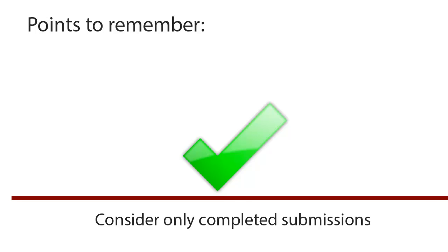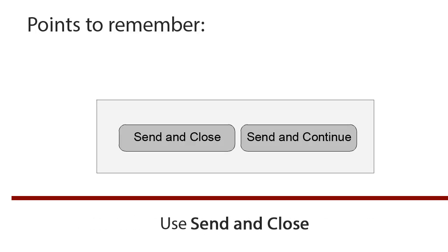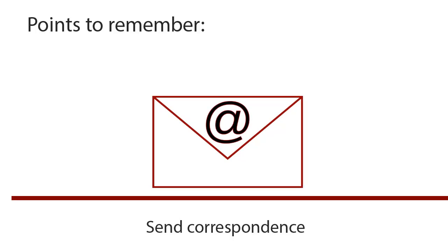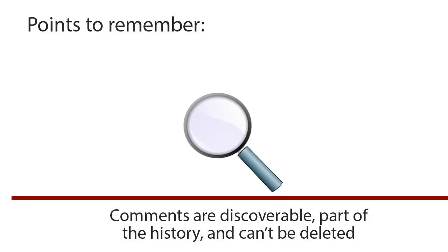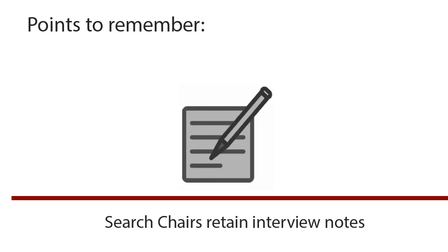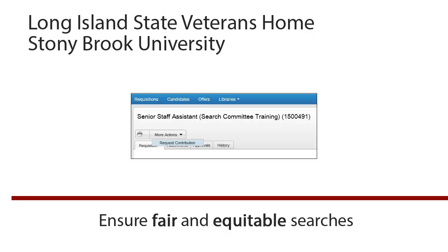Some points to remember: it is important to review only completed submissions — only these can be considered for the position. You can sort columns by clicking on column titles, which is helpful when you have many applicants to review. It is strongly recommended to use Send and Close rather than Send and Continue. Search chairs are responsible for sending formal correspondence for interviews and regrets. While you can revert a candidate's status, you cannot retract correspondence that was sent — use care when sending. Comments are discoverable, found in the candidate's history, and cannot be deleted. All interview notes from the search committee should be retained by the search chair. Long Island State Veterans Home and Stony Brook University users should contact the recruiter assigned to the requisition for a mid-search review to ensure fair and equitable searches, prior to bringing in candidates to interview.